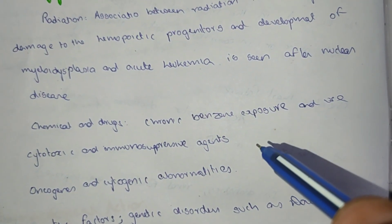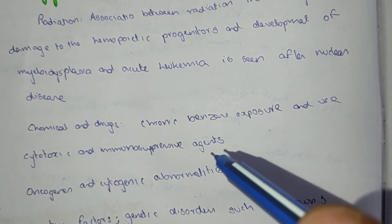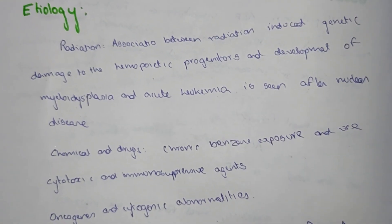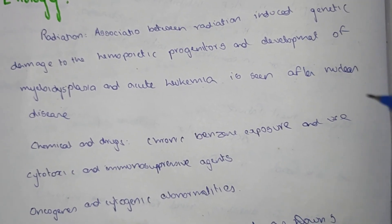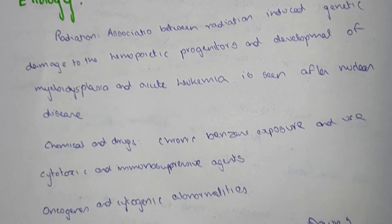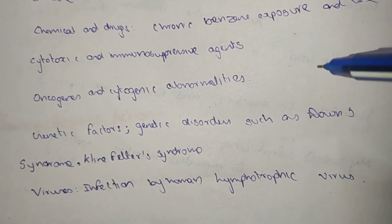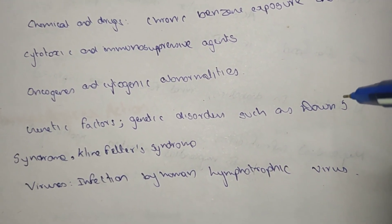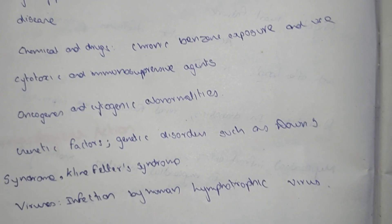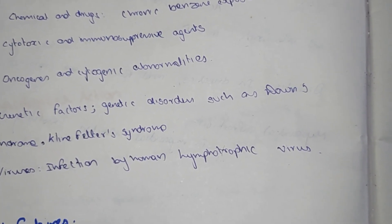Chemical agents such as chronic benzene exposure, cytotoxic agents, and immunosuppressive drugs also cause acute leukemia. Oncogene and cytogenic abnormalities, along with genetic disorders such as Down syndrome and Klinefelter syndrome, are additional causes. Infection by human lymphotropic virus is also an etiological factor.